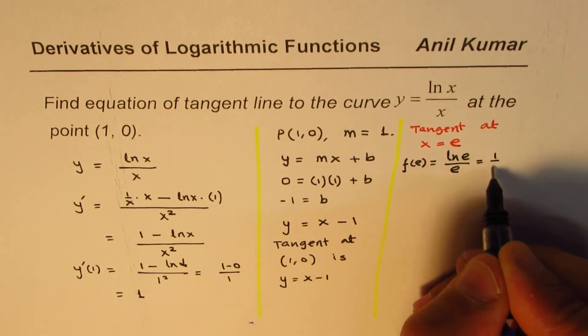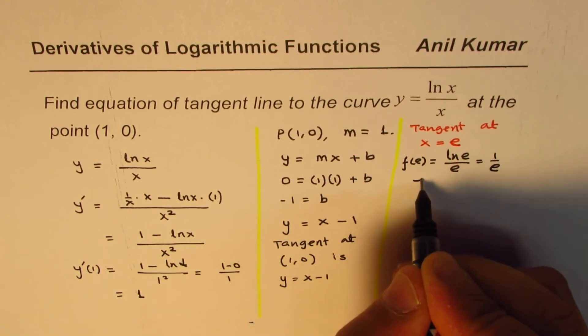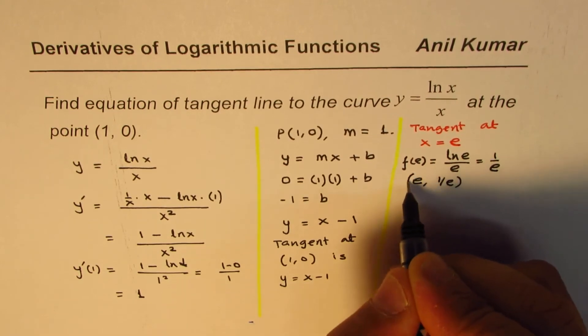ln e is 1, so it is 1 over e. So the point for us is e, 1 over e. That's the point.